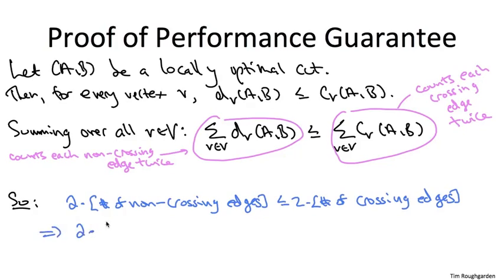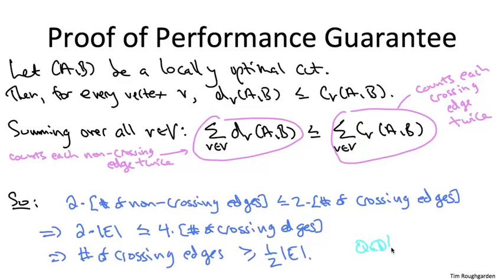Now we want to compare the number of crossing edges of this locally optimal cut to the total number of edges. So on the left-hand side, we're missing the crossing edges. So to complete that into all of the edges, let's just add double the number of crossing edges to both sides of this inequality. On the left-hand side, we get double of all of the edges, and now on the right-hand side, we have four times the number of crossing edges. Dividing both sides of this inequality by four, we see we've proved the theorem. The number of edges that cross A, B is indeed a full 50% or more of the total number of edges in the graph.